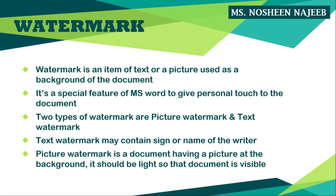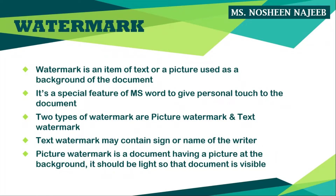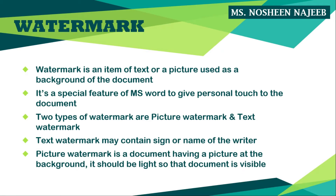In a picture watermark, you add a picture at the background of the document. In a text watermark, you add text such as the name of an organization or a person. The watermark should be lighter in tone so that the document text remains readable and the watermark does not interfere with the text in front of it.